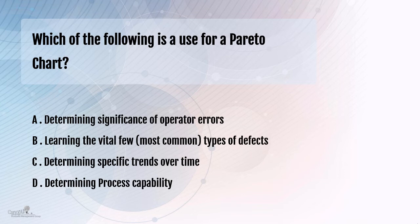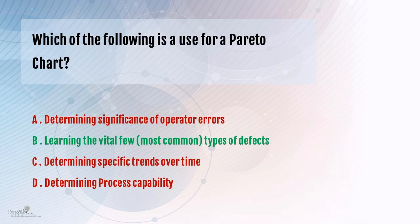As you would know, the concept of Pareto or the 80-20 rule is helpful in prioritization, and in Six Sigma projects we mainly use it for identifying which causes have significant impact on the problem. We want to know the vital few causes which have maximum impact on the defects. So in this case the answer would be B.